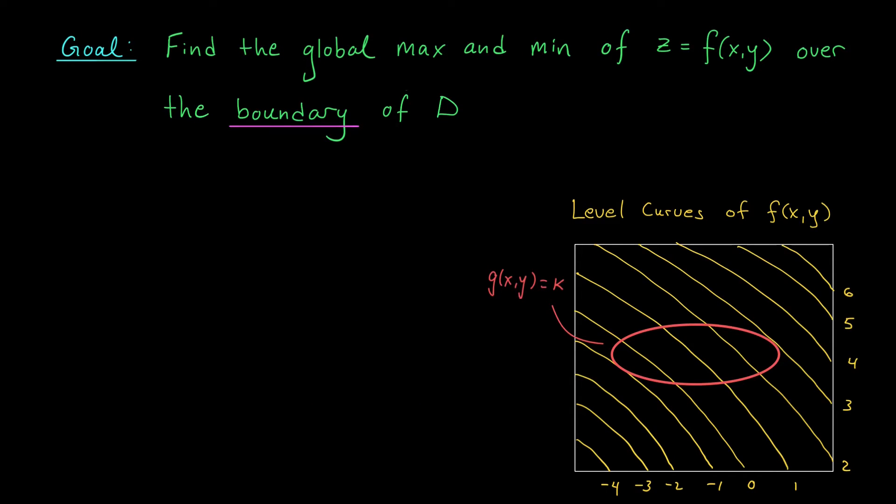Okay, so once again, I'm restricting my attention to just the boundary of our region. The points along this boundary are going to satisfy a certain equation, which maybe we could write as g(x,y) equals to a constant k. For example, if this equation were x squared plus y squared equals 1, we would be considering points along the unit circle.